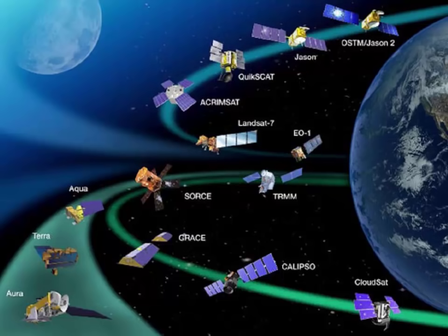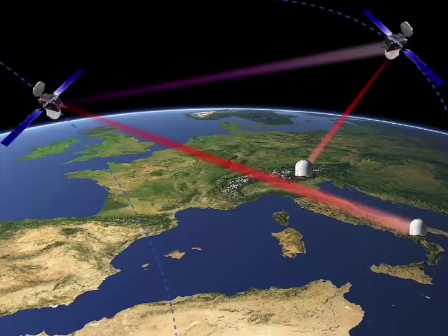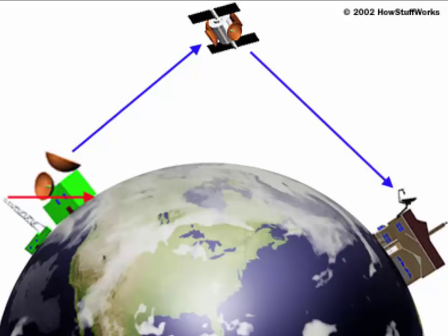How do satellites orbit Earth? Most satellites are launched into space on rockets. A satellite orbits Earth when its speed is balanced by the pull of Earth's gravity. Without this balance, the satellite would fly in a straight line off into space or fall back to Earth.